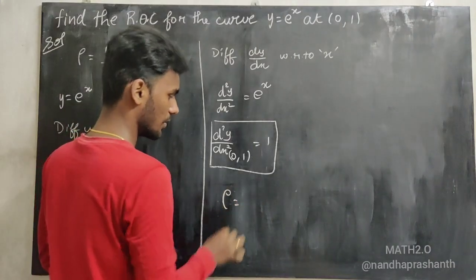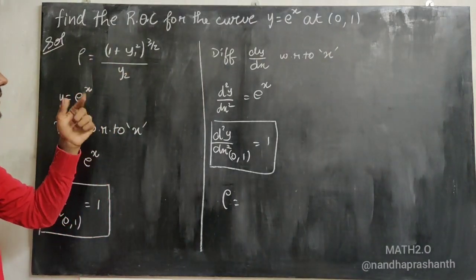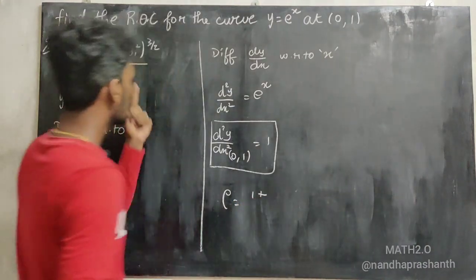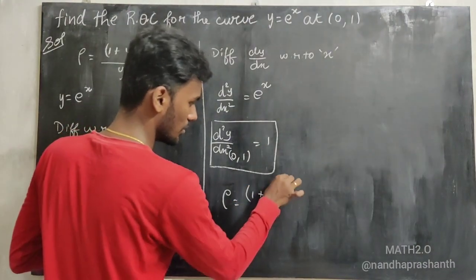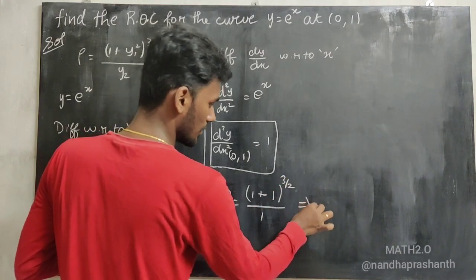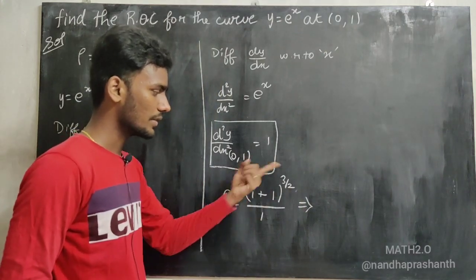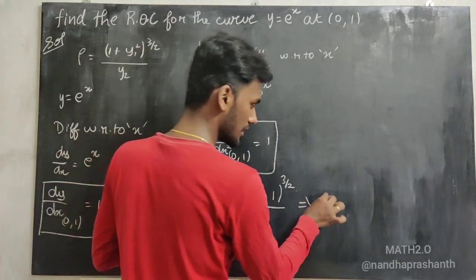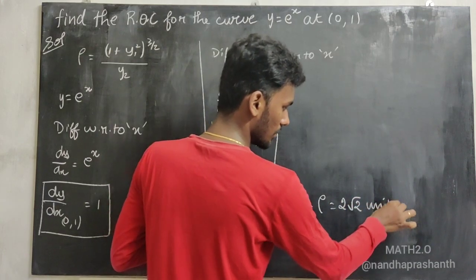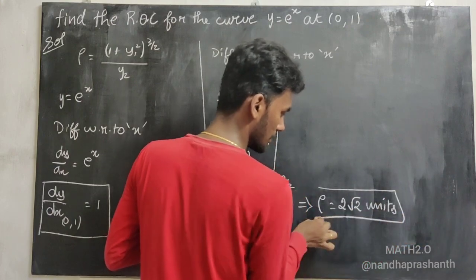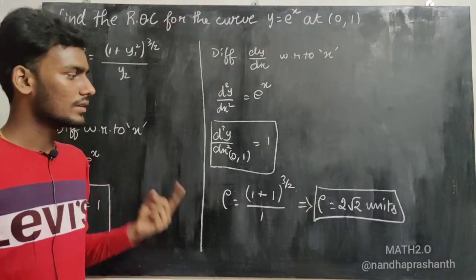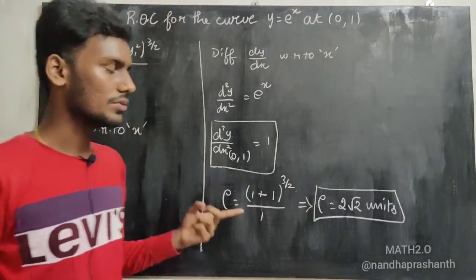Substituting into the formula: rho equals 1 plus y₁ squared, whole power 3 by 2, divided by y₂. That gives us 1 plus 1 squared, whole power 3 by 2, divided by 1. Simplifying: 2 to the power 3 by 2, which is 2 times root 2. So the radius of curvature of y = eˣ at (0, 1) is 2√2 units.